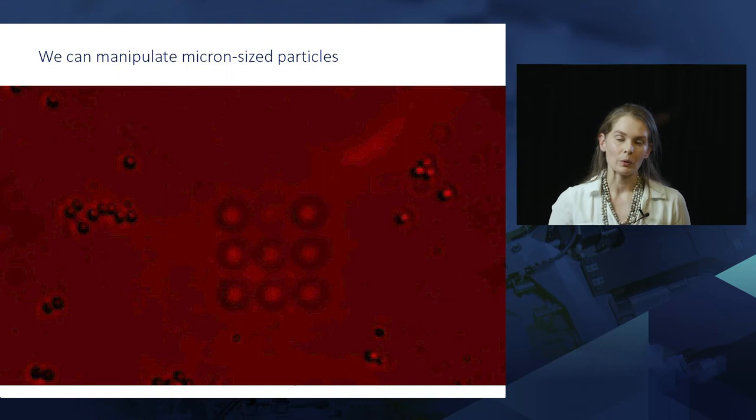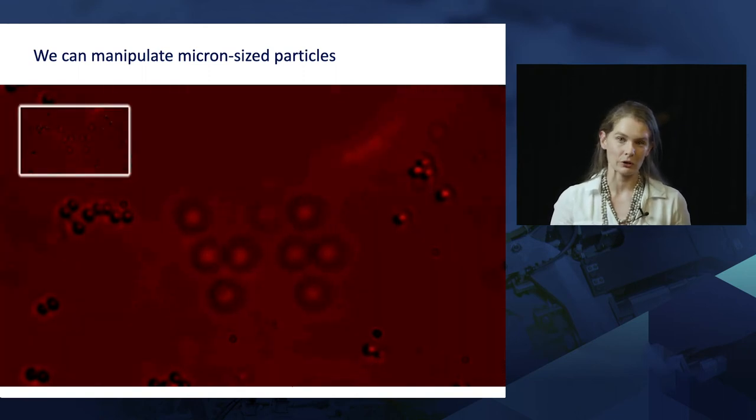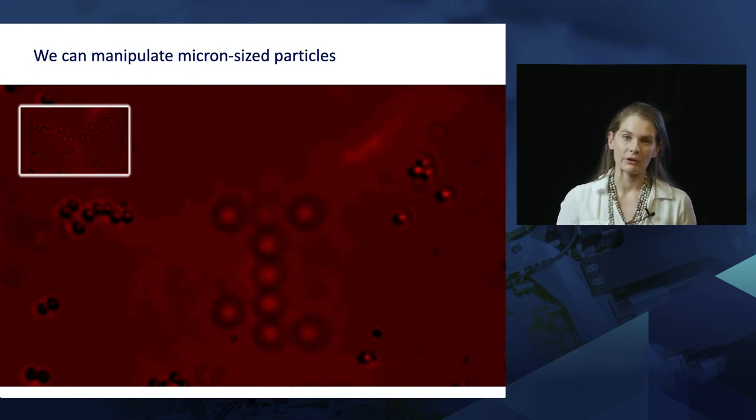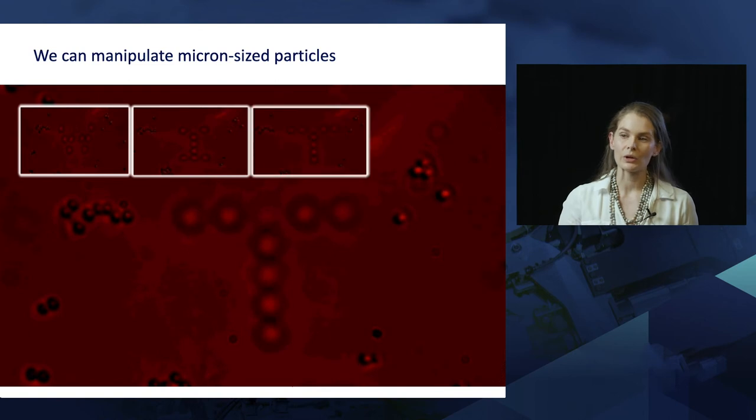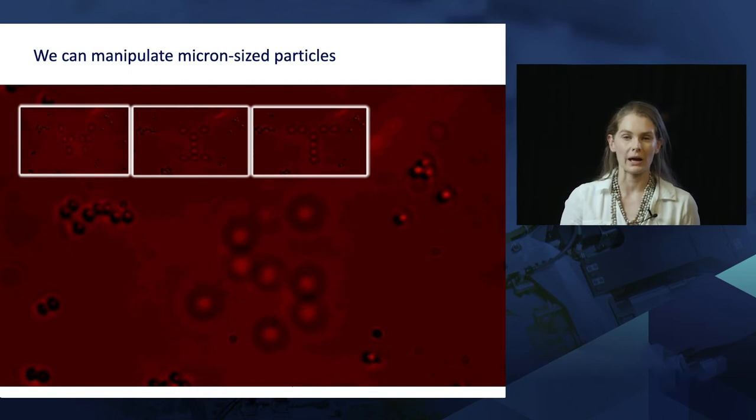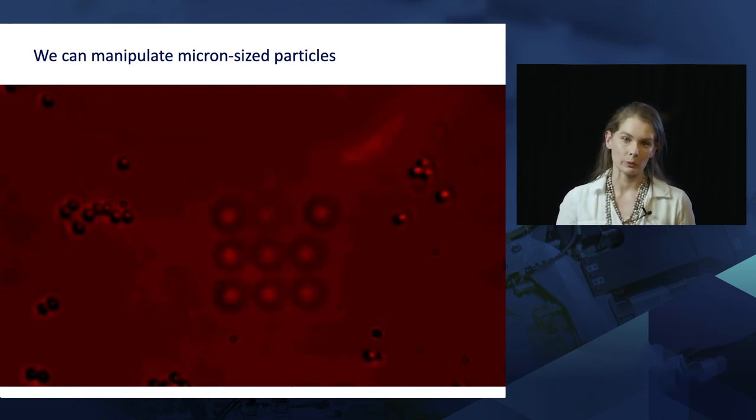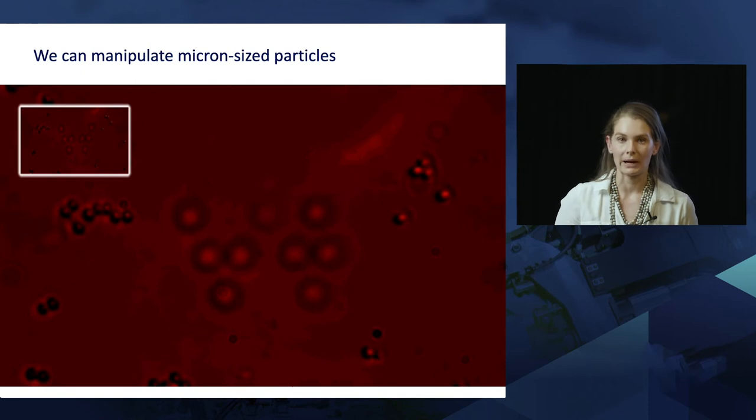So just one quick example where we view structured light is actually in optical tweezing and trapping. This little video over here just shows us manipulating micron sized particles through a microscope system, where we're actually able to move the little particles based on the intensity gradient of the optical field. So now by using structured light fields, we can do cool little tricks such as impart orbital angular momentum to our particles, so we can get little particles to rotate around the petri dish, which allows us to actually create little micro optical spanners and use them in what we call microfluidics.